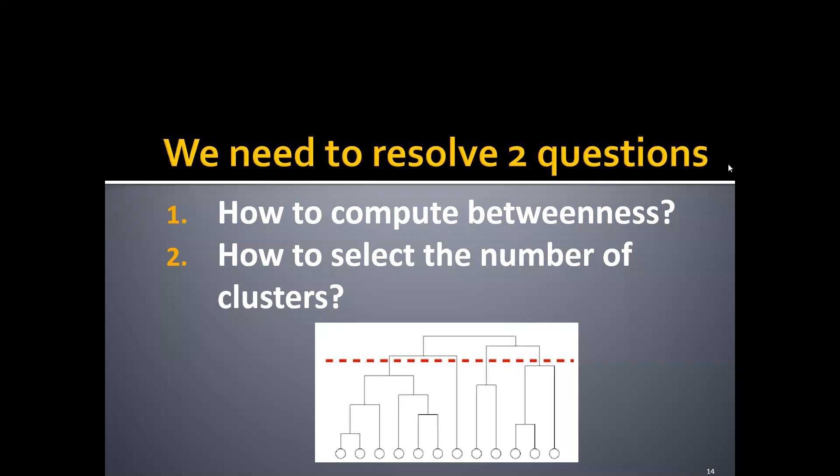You may have noticed that we actually left out some details in the Girvan-Newman algorithm, and specifically we need to resolve two questions: how to compute betweenness, and how to select the number of clusters.